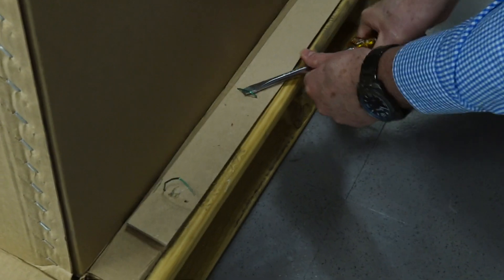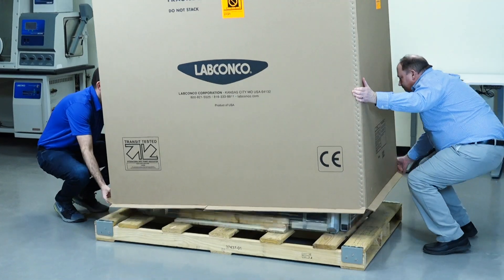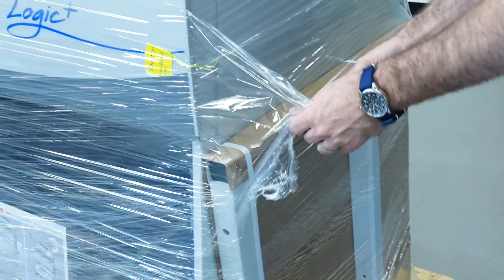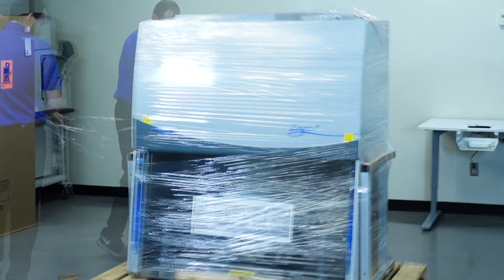Begin by removing the cardboard box from the Biosafety Cabinet. Once unboxed, inspect for any shipping damage. If any damage has occurred in shipping, contact the freight carrier.